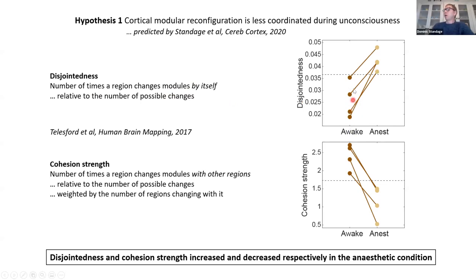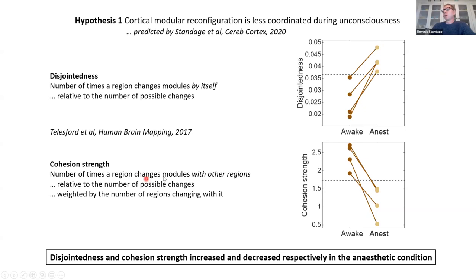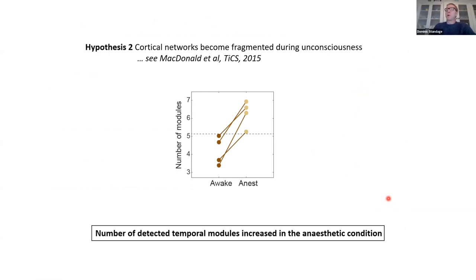In the awake condition shown in dark shade, these are the within-subject means — for each monkey across all scans. We see the awake condition and the anesthetic condition in light shade. For each monkey, we have pairwise increases in disjointedness — this haphazard, uncoordinated reconfiguration. All of the anesthetic data are separate from all of the awake data. The inverse of this measure is cohesion strength: the number of times each region changes modules together with other regions, weighted by the number of regions it changes with. We see that in the awake state, we have higher cohesion strength than under anesthetic. So far, two for two in terms of hypotheses.